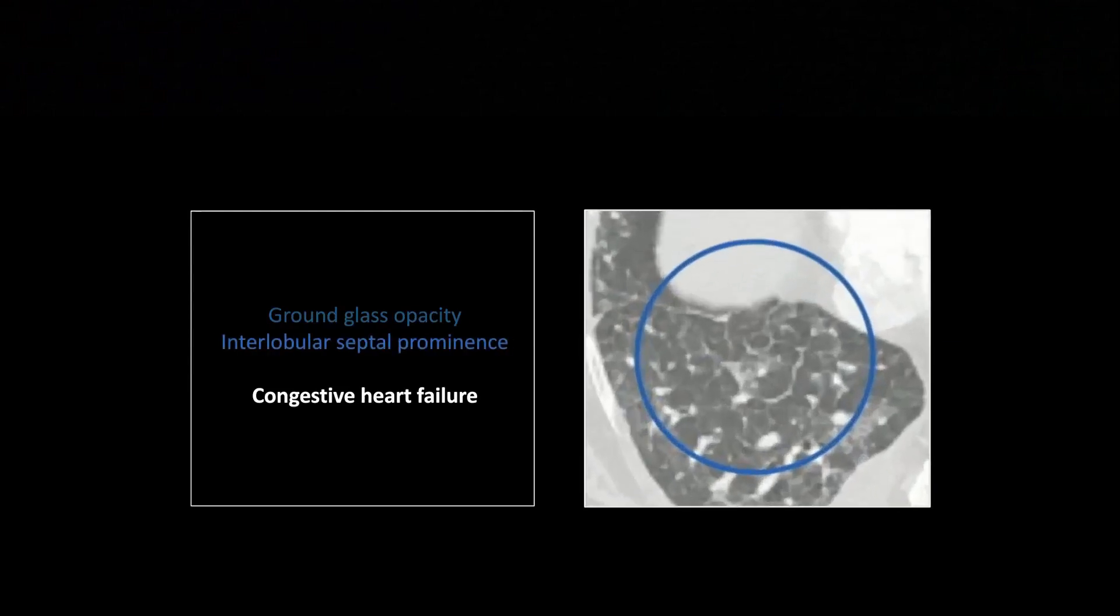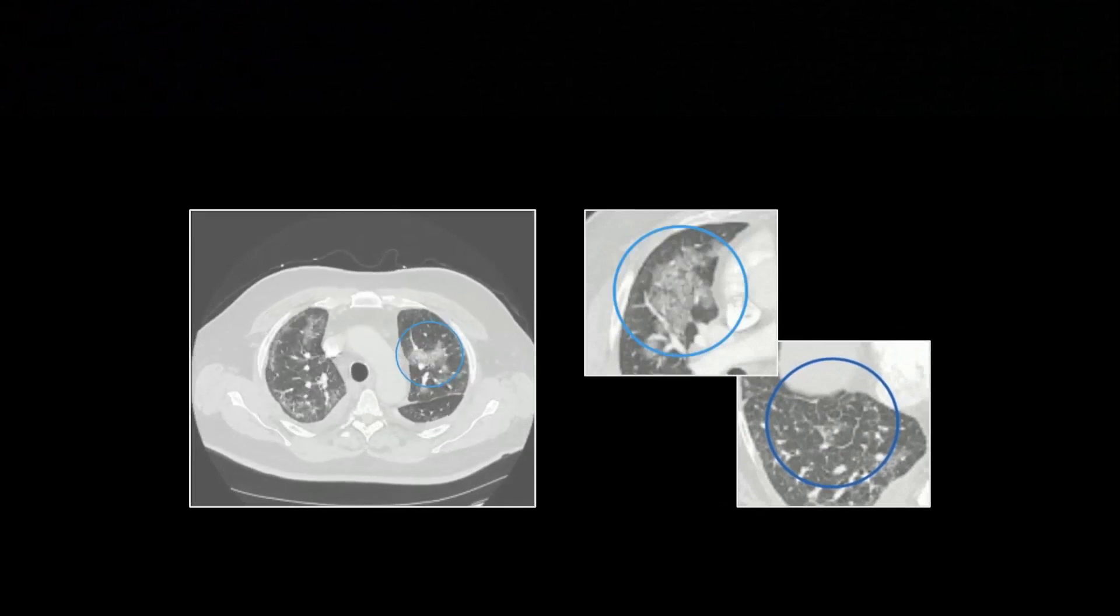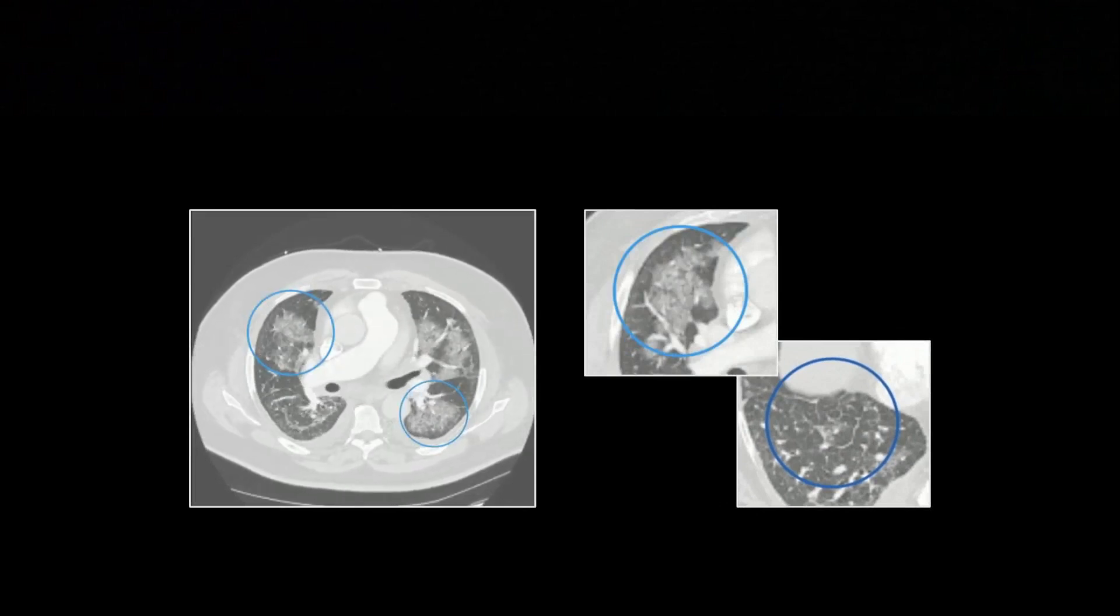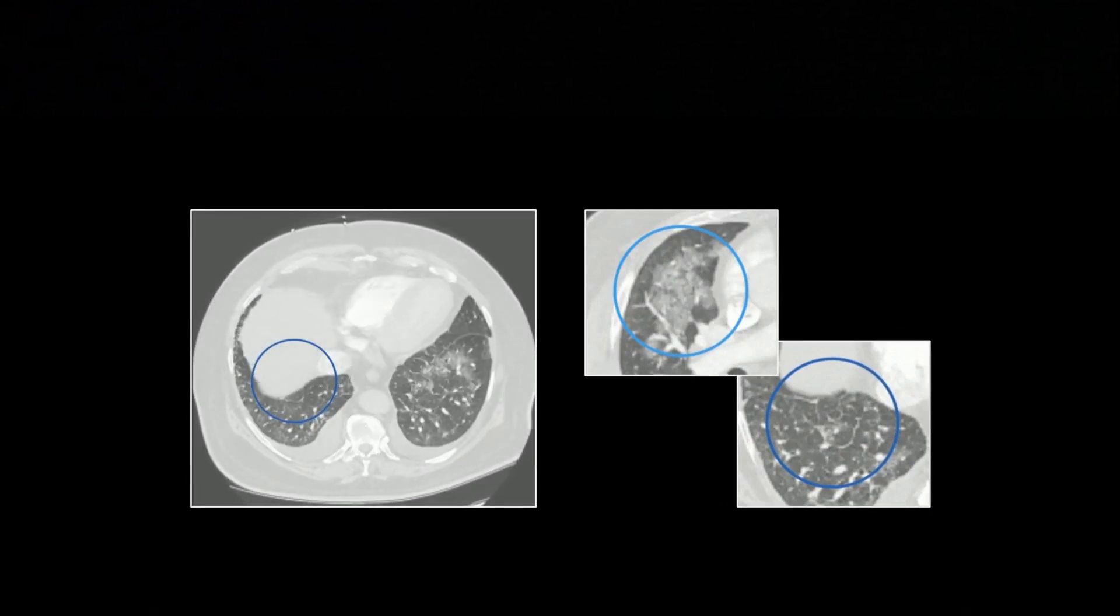The thing that really seals this for me is this is an example of interlobular septal thickening. You see in the central portion there, it almost looks like a bunch of linked hexagons. They're a little larger than you would expect for it to be crazy paving. This is congestive heart failure. It's central in the lobes with the ground glass density. Another old trick one of my attendings gave me was sometimes when you get stuff that is so dense you can't tell what's going on, look to the edge of the involved region.